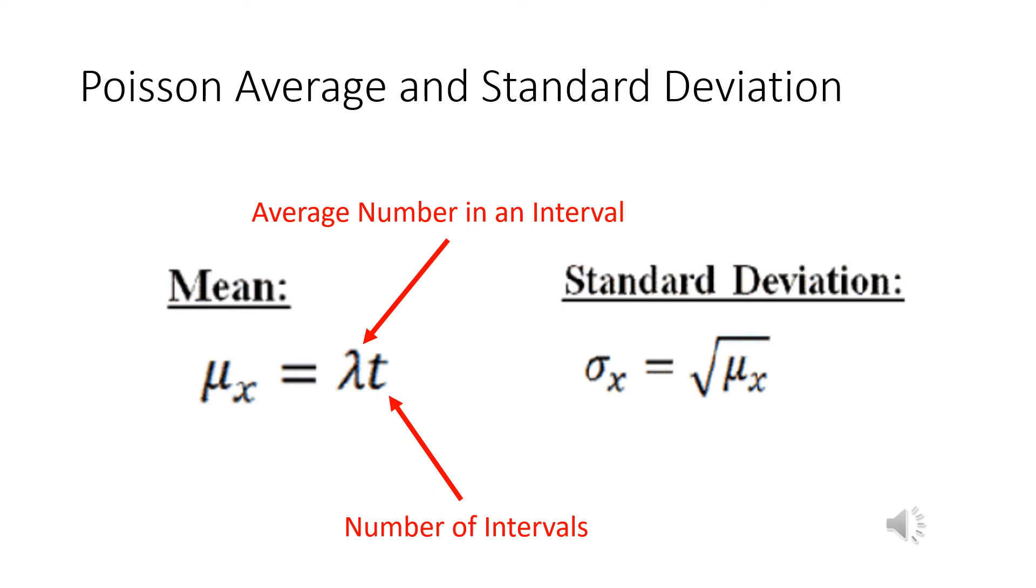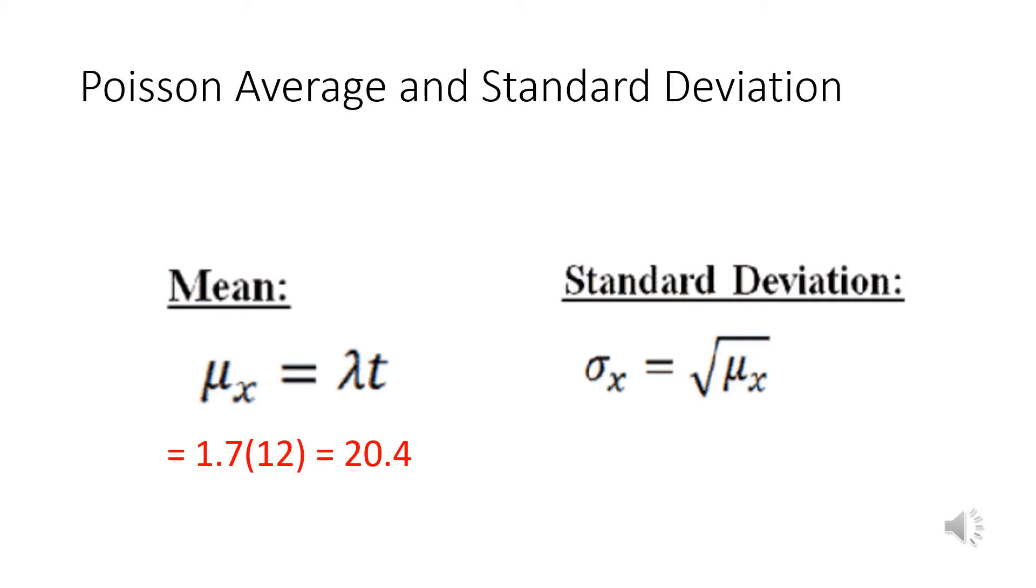Then I'm going to take that number and multiply by the number of intervals. In this case it's 12. So 12 times 1.7. In our case, our average is 1.7 per hour times 12 hours, so it's 20.4. That is our mean—our Poisson mean, 20.4.